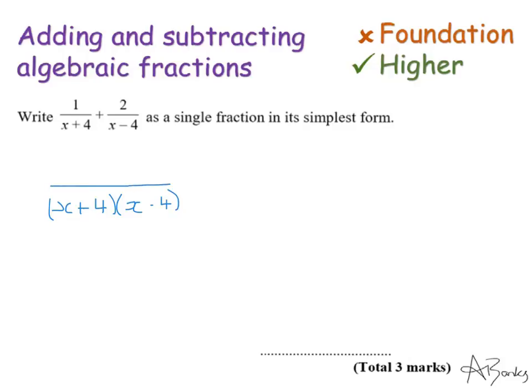Now I've multiplied this fraction by x minus 4. So my top, I have to multiply by x minus 4 as well. My second fraction, I'm going to put the same denominator in the same order. This one has been multiplied by x plus 4. So I'm going to multiply my numerator by x plus 4.